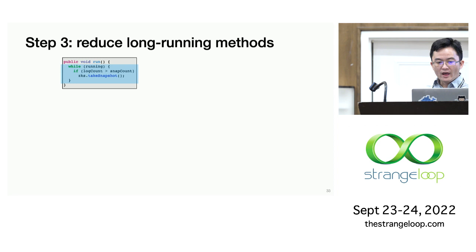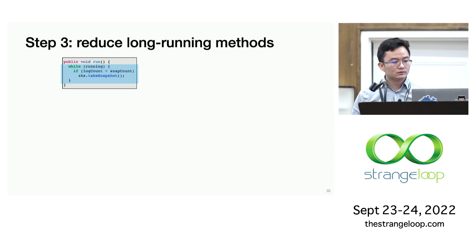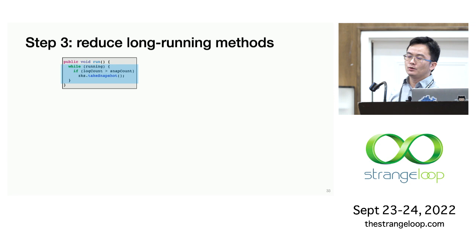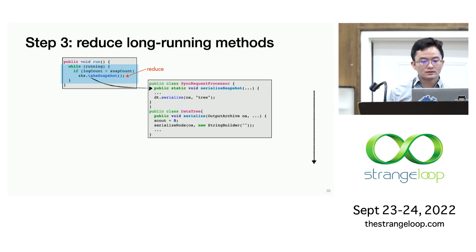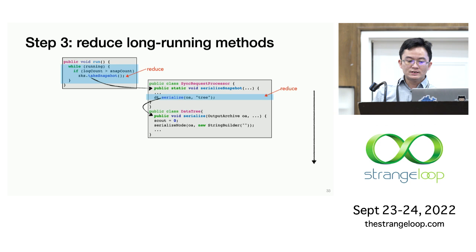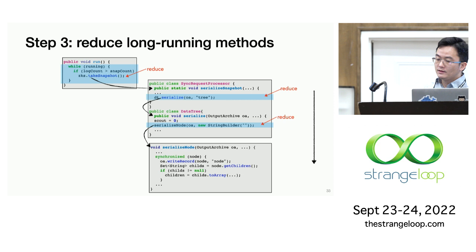Once we have the identified long-running method, OmegaGen performs a top-down reduction from the entry point of each long-running method. In this example, it reduces the take-snapshot function which is executed inside a while loop. Working through the control flow graph of the function, it checks if an instruction is vulnerable based on the previous criteria, and keeps the instruction if so — otherwise it is discarded. For a call instruction not yet determined, such as this dt.serialize call, it will be temporarily retained and OmegaGen will recursively reduce the callee. So we reduce the serialize function and the serialize-node function, and finally find the write-to-record operation there to keep.